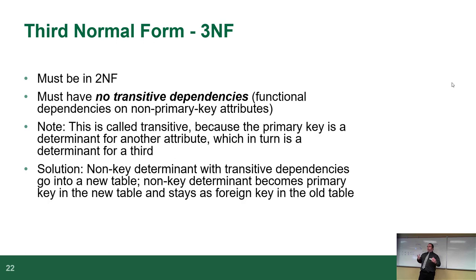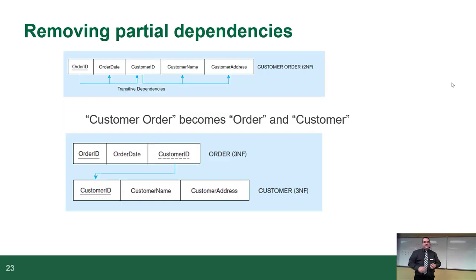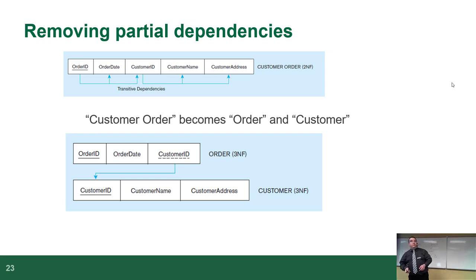To fix second normal form to reach third normal form: non-key determinants with transitive dependencies go into a new table. We break the customer out into its own table — customer ID, name, and address — and the order table just keeps a foreign key referencing the customer. That means if we want to change a customer's address, we change it in exactly one place. That's third normal form.